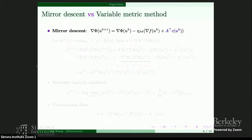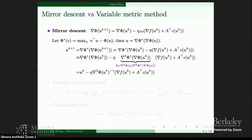Now we want to put mirror descent into the more general framework of variable metric methods. We define phi^* as the convex conjugate of phi. It is straightforward to check this identity, and starting from it, u_{k+1} equals grad phi^* of grad phi at u_{k+1}. Plugging in the mirror descent update and conducting the Taylor expansion keeping the leading two terms: the first term reduces back to u_k through the identity, and for the second term we use the relation — marked in purple — obtained by taking the gradient in u of this identity. In the end this reduces to the inverse of the Hessian multiplied by the gradient.